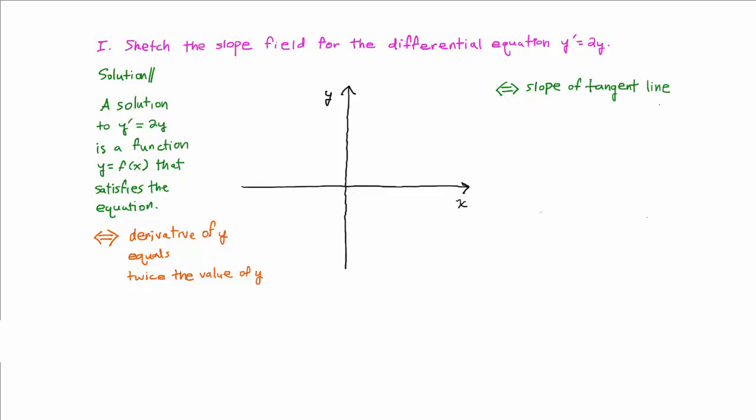We don't yet know what this graph looks like but let's pretend this is the graph and this is the point xy. Then the slope of this tangent line must be twice the value of y. If the y coordinate of the point is 1, for example, the slope of the tangent line would have to be 2 times 1.